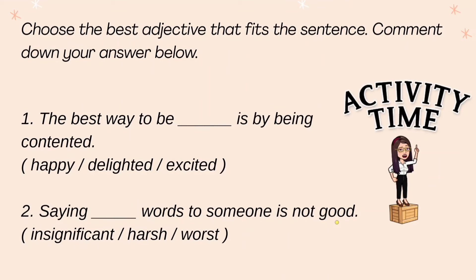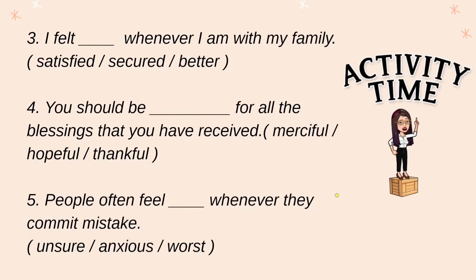Choose the best adjective that fits the sentence. Comment down your answer below. Number one: 'The best way to be ___ is being contented.' Number two: 'Saying ___ words to someone is not good.' Number three: 'I felt ___ whenever I am with my family.' Number four: 'You should be ___ for all the blessings that you have received.' Number five: 'People often feel ___ whenever they commit a mistake.'